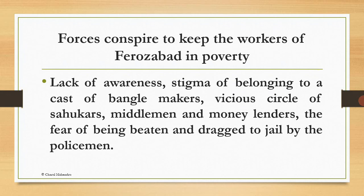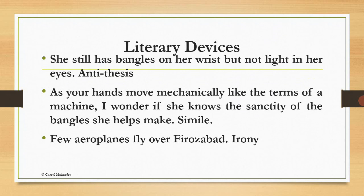There are forces which conspire to keep the workers of Ferozabad in poverty: lack of awareness, the stigma of belonging to a caste of bangle makers, the vicious circle of sahukars and middlemen and money lenders, and the fear of being beaten and dragged to jail by the policemen. Literary devices: 'She still has bangles on her wrist but not light in her eyes' — antithesis. 'As your hands move mechanically like the terms of a machine, I wonder if she knows the sanctity of the bangles she helps make' — simile. Few aeroplanes fly over Ferozabad — irony.